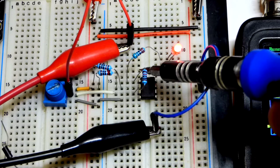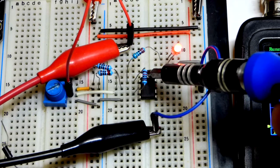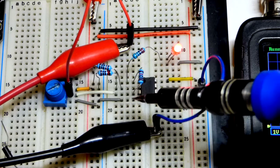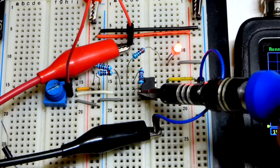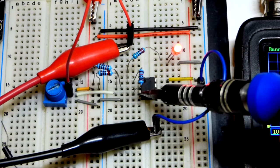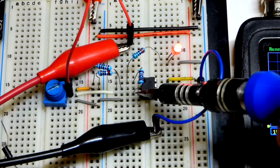When it comes to the Schmitt trigger, you are working with positive feedback, so that's going to the non-inverting input, the plus sign when you look at the schematic symbol.